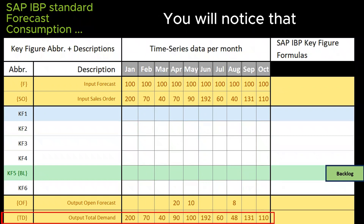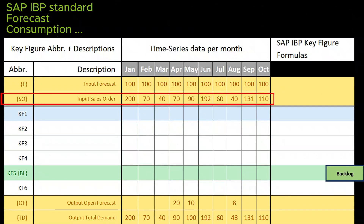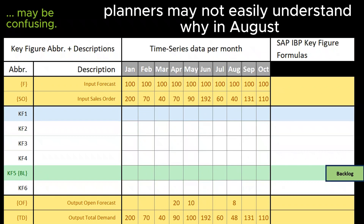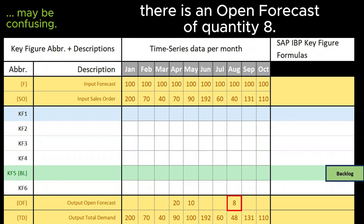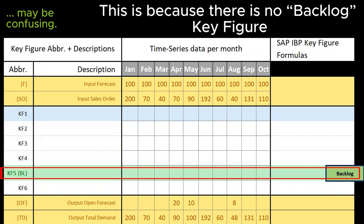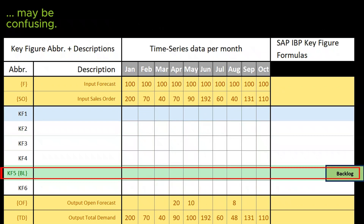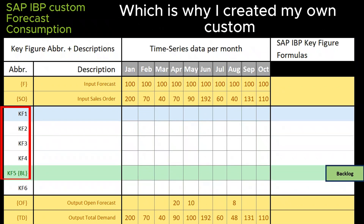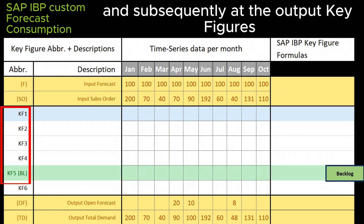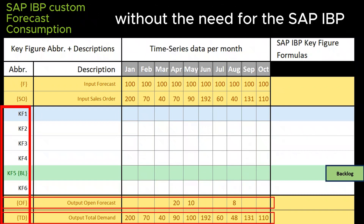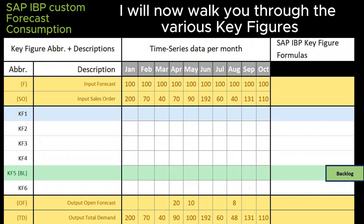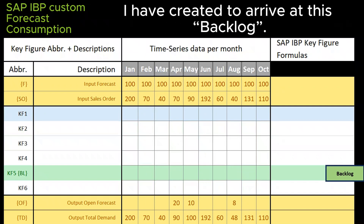You will notice that total demand is equal to the open forecast plus the input of the sales orders. However, planners may not easily understand why in August there is an open forecast of quantity 8. This is because there is no backlog key figure or concept in SAP IBP standard, which is why I created my own custom calculated key figure algorithm to arrive at the backlog, and subsequently at the output key figures, without the need for the SAP IBP standard forecast consumption.